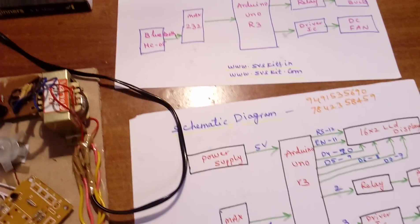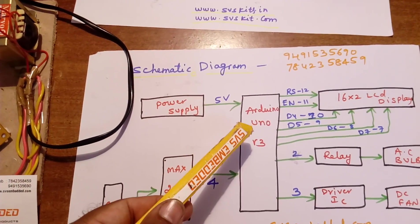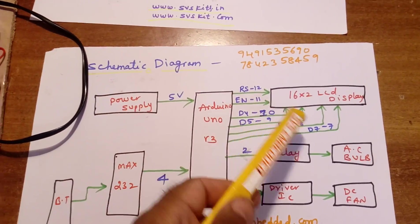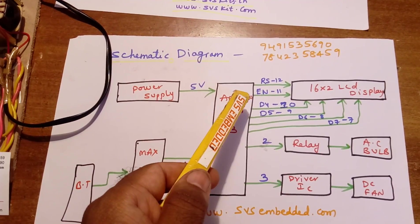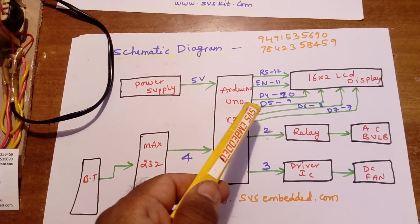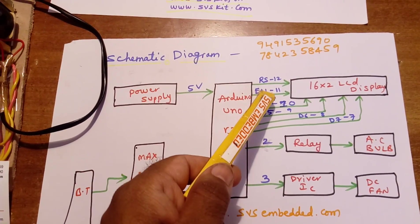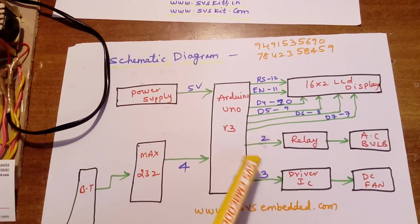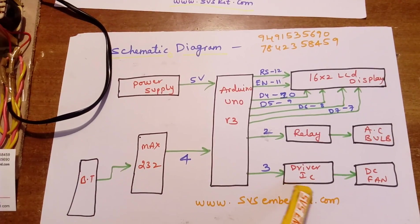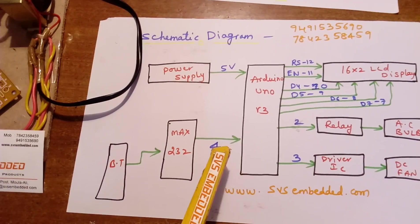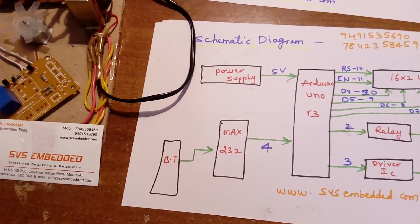Now let's go to the schematic diagram. The Arduino Uno R3 connects to a 16x2 LCD display via pins RS, Enable, D4, D5, D6, D7 on pins 12, 11, 10, 9, 8, and 7. The relay is connected to pin 2, the driver IC is connected to pin 3, and the MAX232 is connected to pin 4.